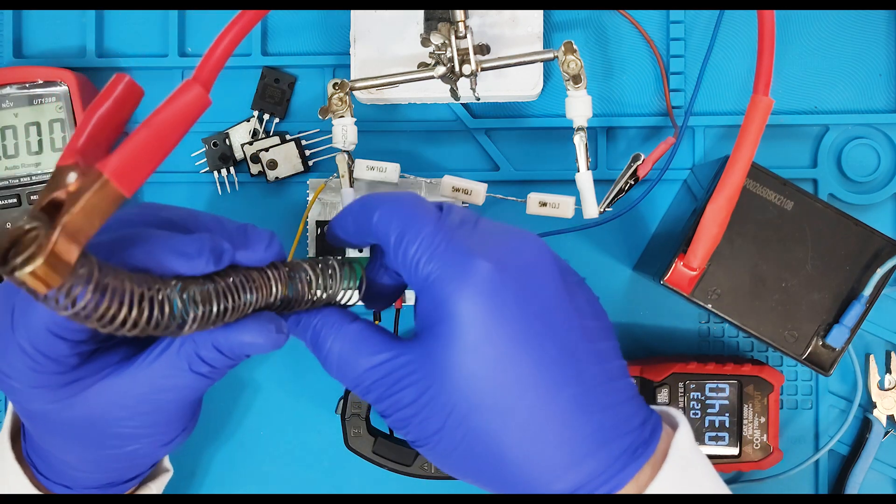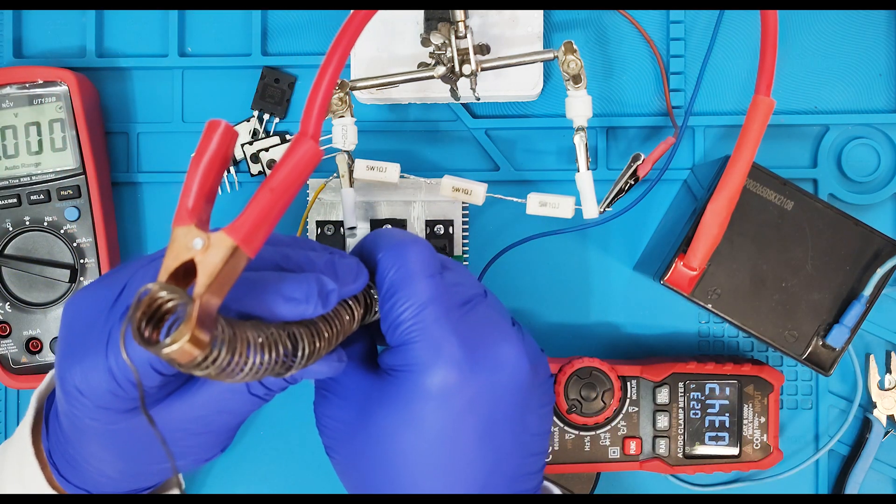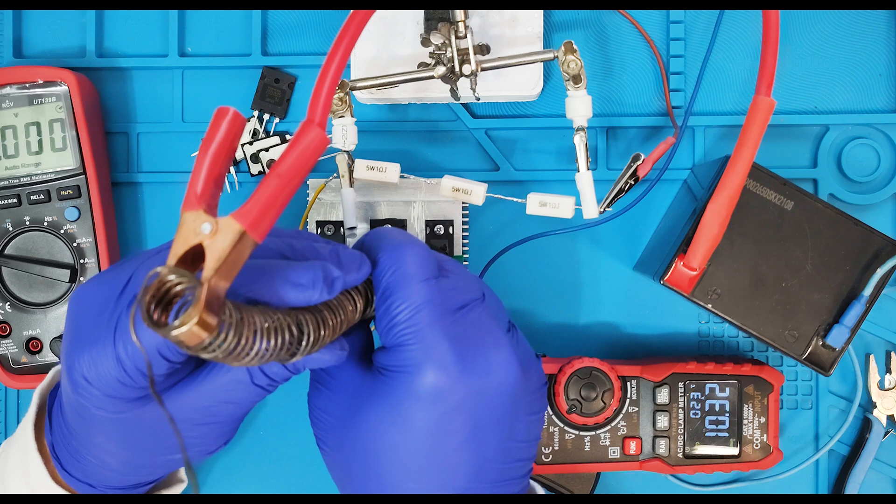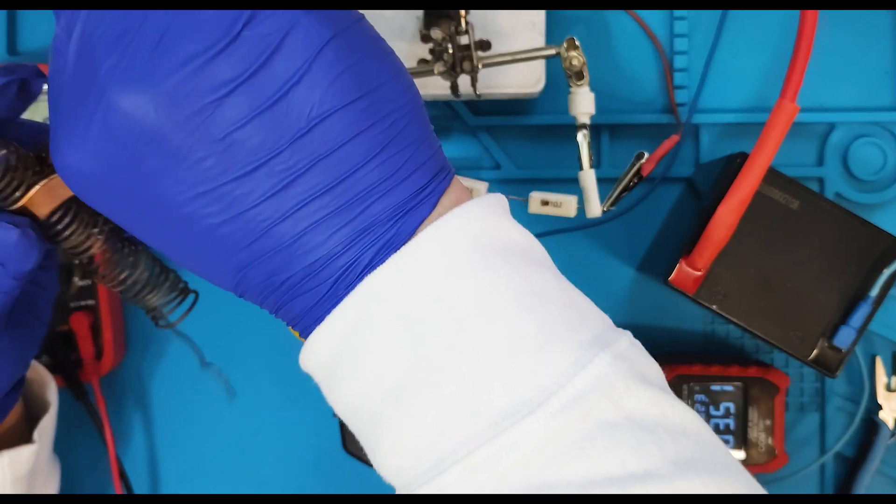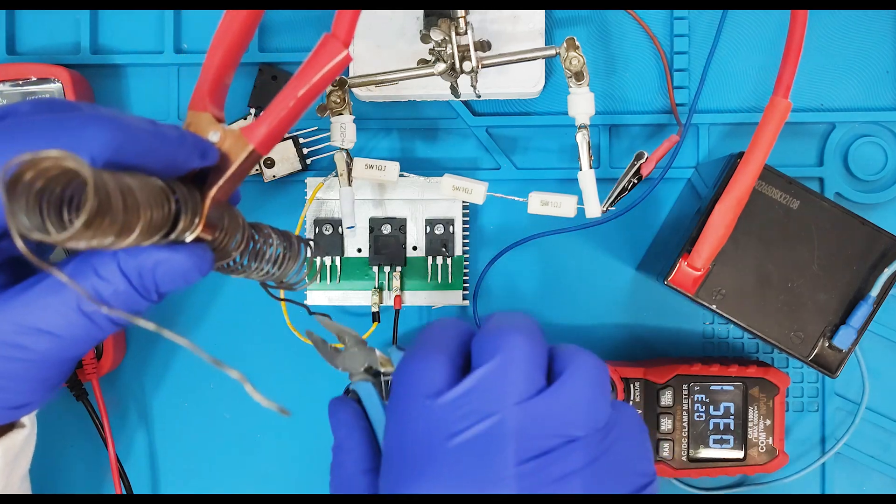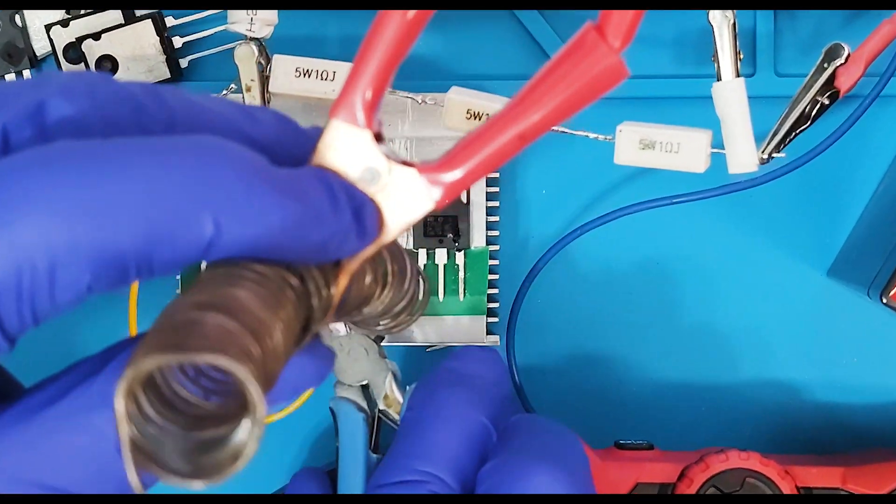This Darlington transistor has a more size and must be more powerful than we tested before. Once again, we can see that the current of base is the 3.5 amps. Connect low load and we can see that the transistor is OK.